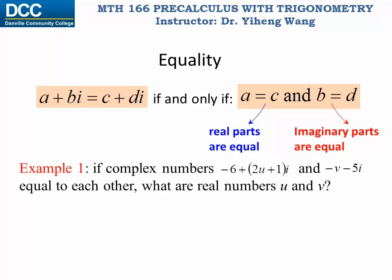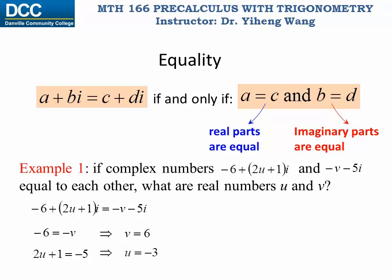For example, if there are two complex numbers, negative six plus two u plus one i and negative v minus five i, and they equal each other, we need to solve for u and v. Since they're equal, the real parts must be equal: negative six equals negative v, so v equals six. And their imaginary parts are also equal: two u plus one equals negative five, so u equals negative three. Therefore they both equal negative six minus five i.